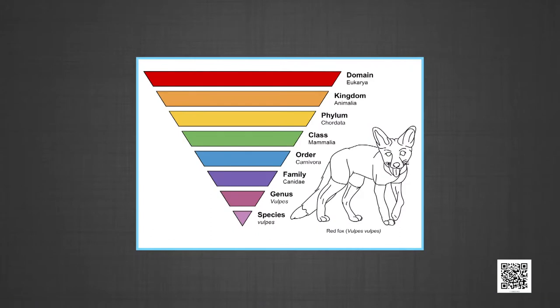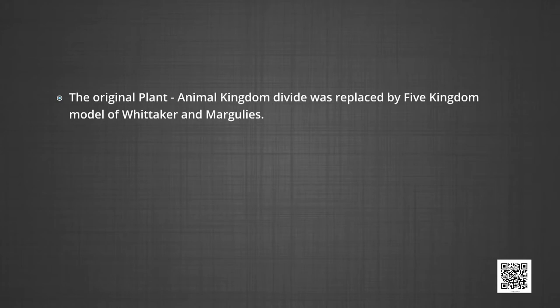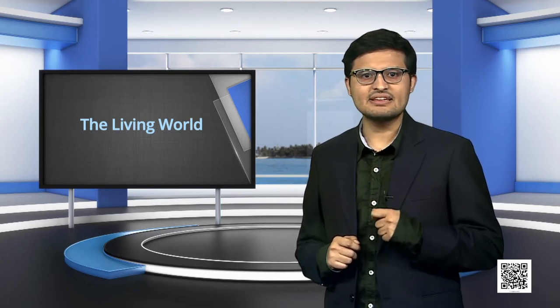Kingdom is the highest ranking in the standard Linnaean system. The term is based on earlier medieval ideas. Examples include: animal kingdom, vegetable kingdom, mineral kingdom. The original plant-animal kingdom divide was replaced by the five-kingdom model of Whittaker and Margulis. All animals belonging to varieties of phyla are assigned to the highest category called Kingdom Animalia, while Kingdom Plantae is distinct and comprises all plants from various divisions. As we go higher from species to kingdom, the number of common characteristics goes on decreasing.